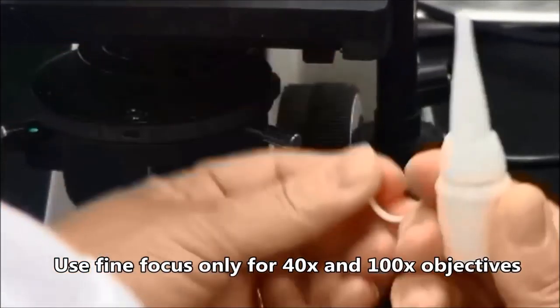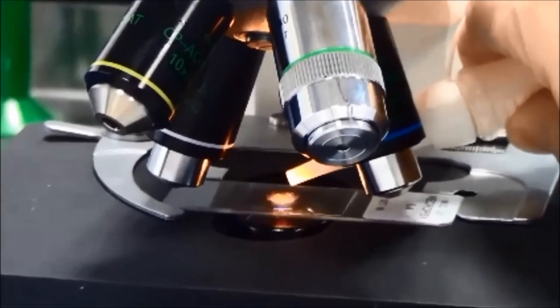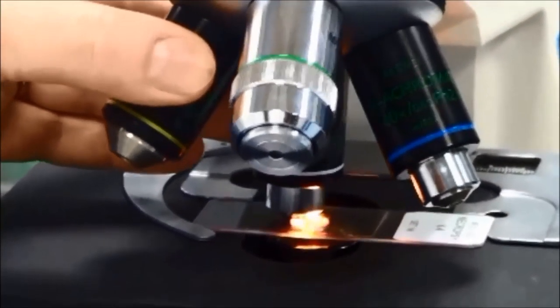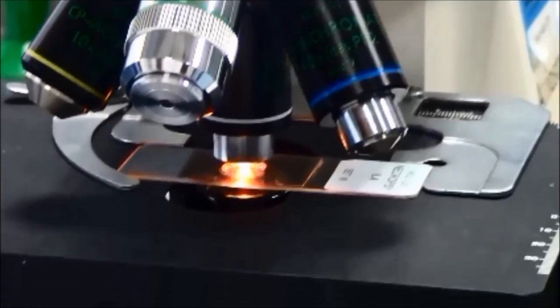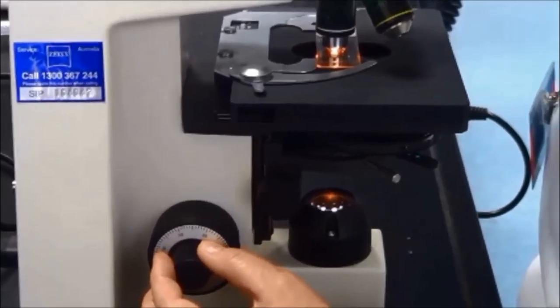To use the 100x lens, swivel the turret so the slide is between the 40x and 100x objective lenses. Place a drop of immersion oil on the circle of light on the slide and swivel the 100x lens into position so it is in contact with the oil. Refocus using the fine focus only.